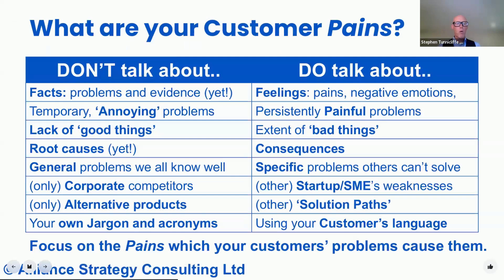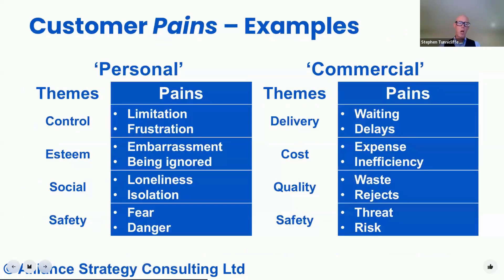When talking about our customers' problems, we need to think about how it makes them feel. The most important problems to solve are those which cause severe and persistent pain to our customers. Which of your customers' pains are not yet being addressed? And how can you use your customers' own language to help their understanding? We all have different reasons for buying things. We might be motivated by our feelings, or just be looking for a better deal. Whether buying for a business or just ourselves, our motivations may be personally or commercially driven. Here are some possible pains to consider. If you're in the business of providing promotion services, there's a list of themes on those as well.